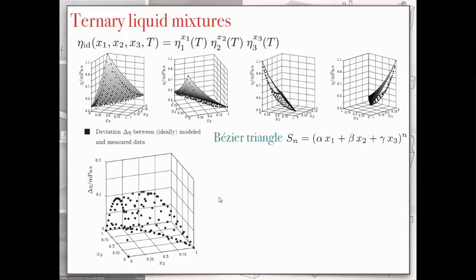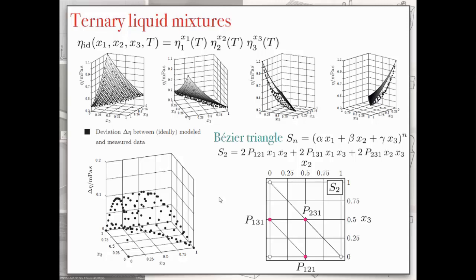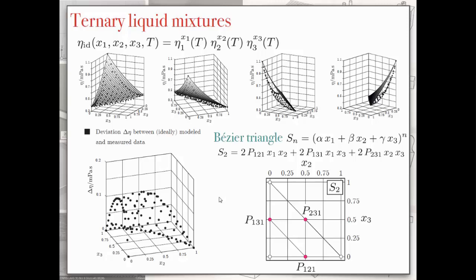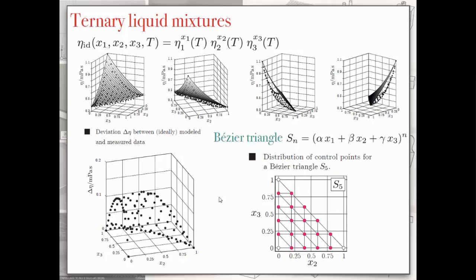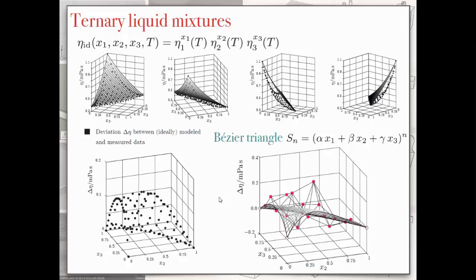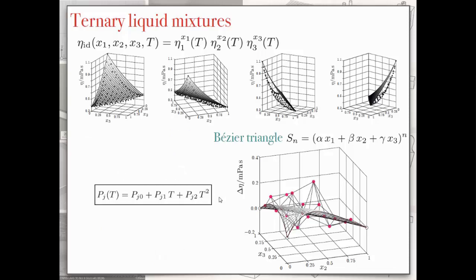So what modeling is all about is just to account for the deviation from your ideal models, which we do using Bézier triangles. Bézier triangles is nothing else than a two-dimensional polynomial of order n. Bézier triangles of second order is given here. If you plot it, you have control points where, in our case, we choose the control points at the end to be zero, and we only have to set the control points in the middle. Actually, we are using fifth-order Bézier triangles, and what we do is to account for the temperature dependence of the liquids is that these control points are modeled by a second-order polynomial to account for the temperature dependence.